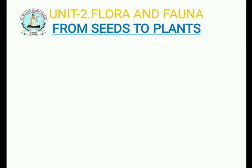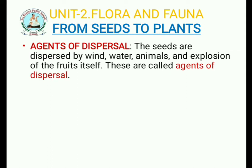Today we will start a new aspect: agents of dispersal. The definition of agents of dispersal — seeds are dispersed, scattered, or spread by wind, by water, by animals, and by explosion of the fruits itself. These are called agents of dispersal.